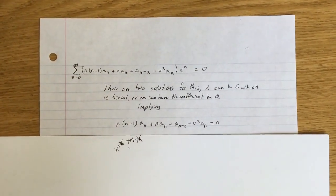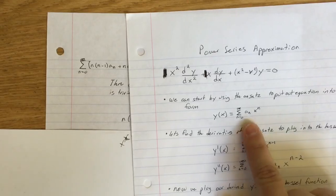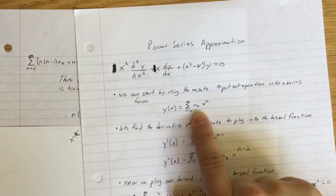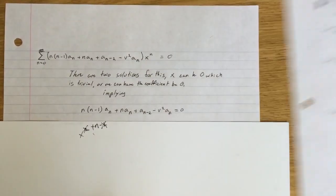The reason why we want to solve for a_n is so that when we later go back and solve our equation, we have all of the a_n's for our power series approximation.